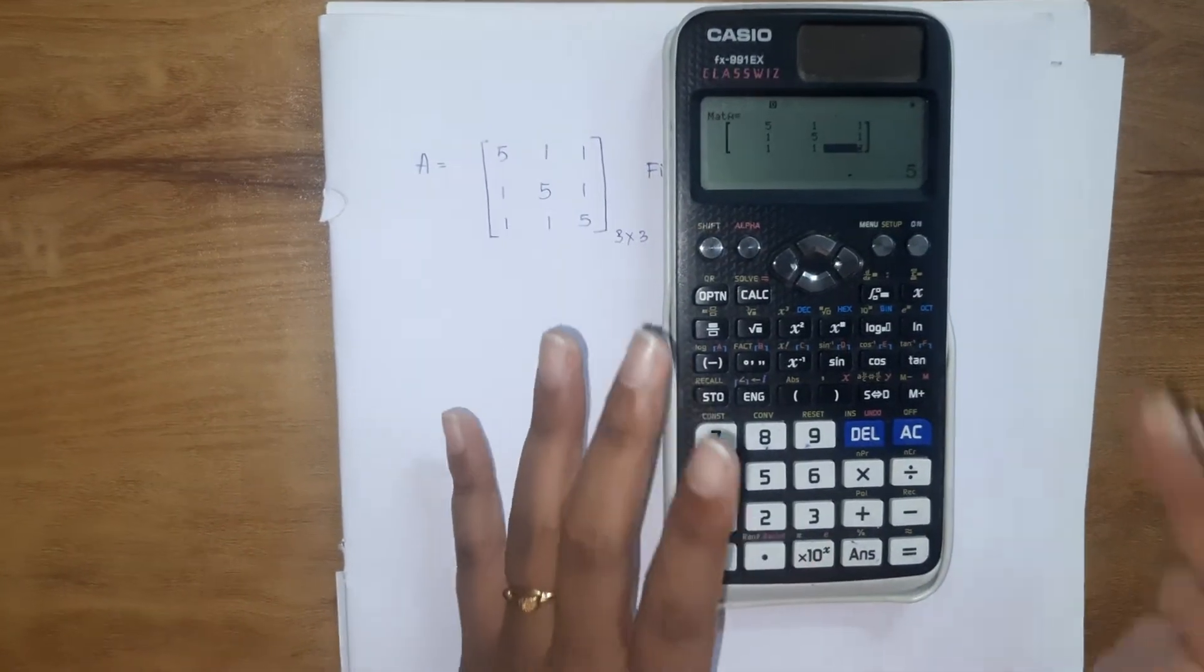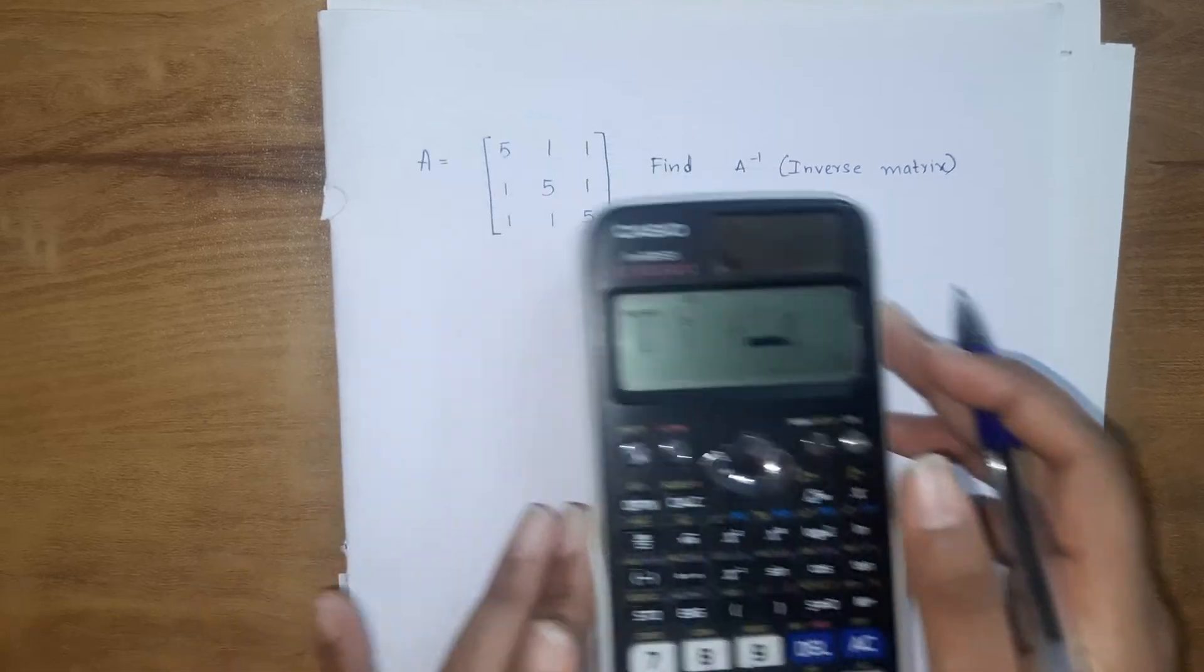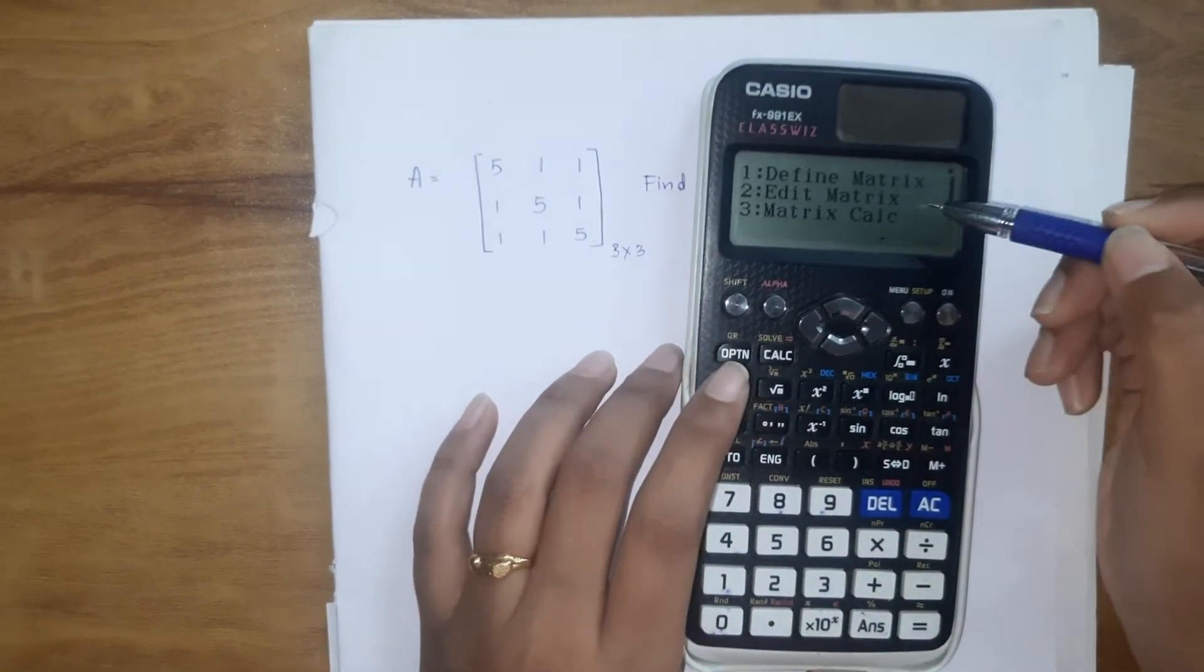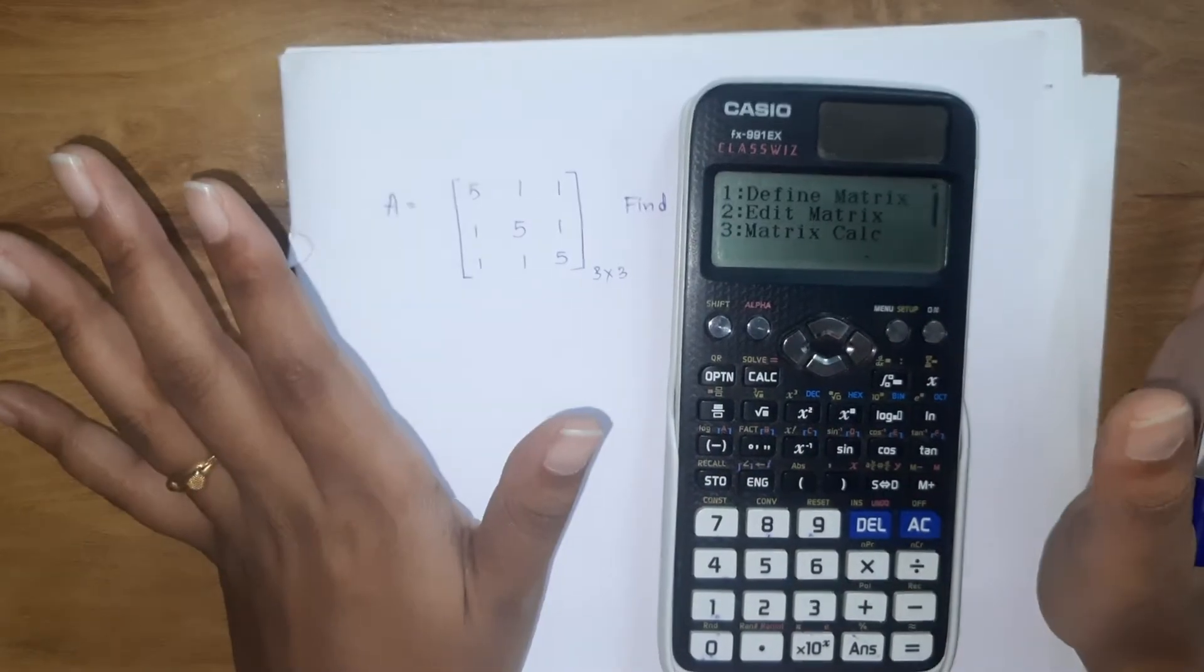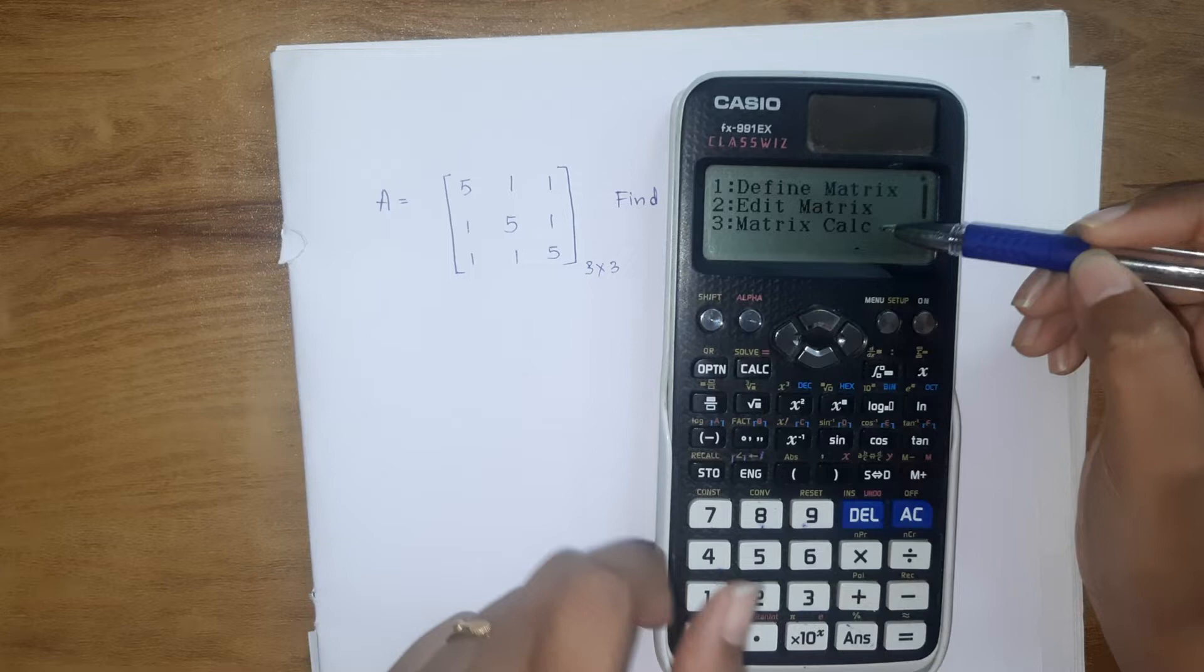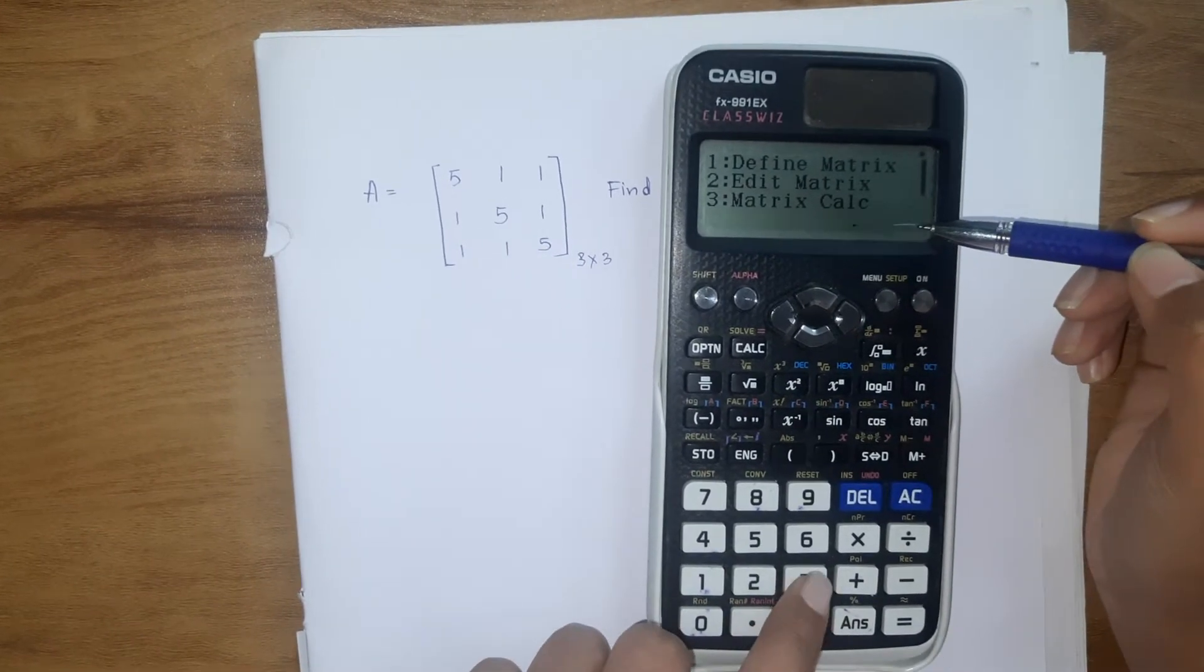Now we need to calculate A inverse. So what are we going to do? Go to option. The definition of the matrix is done. Is there anything to edit? No, we have entered the values correctly. This is the option we need: matrix calculation. Click on 3.